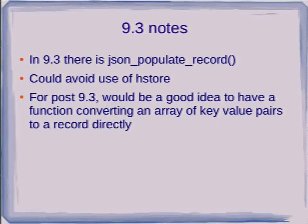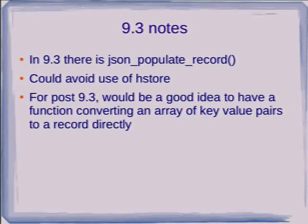In 9.3 we've got JSON populate_record, which means you could avoid the use of HStore if you want to turn stuff into a record. Post-9.3 it would probably be a good idea to have something which didn't have to use these intermediate types — JSON or HStore — to create a record. We should have a function, either in core or as an extension, which takes an array of key-value pairs and simply produces a record of the required type directly. It's probably worth having in core given its sufficiently general use.